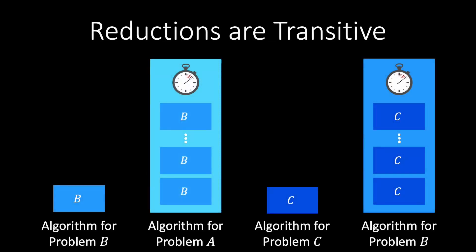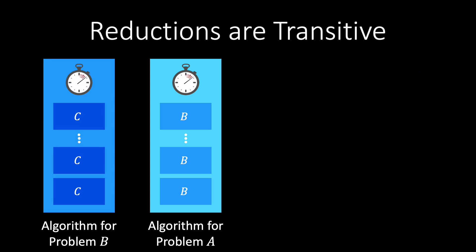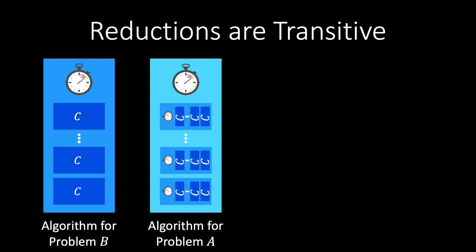Polynomial reductions are also transitive. Suppose problem A reduces to problem B, and problem B reduces to problem C. Then there is an algorithm that solves B using a solution to C, and an algorithm that solves A using a solution to B. We can thus use the algorithm that solves B using C inside the algorithm for A, to get an algorithm that solves A using the solution to C.